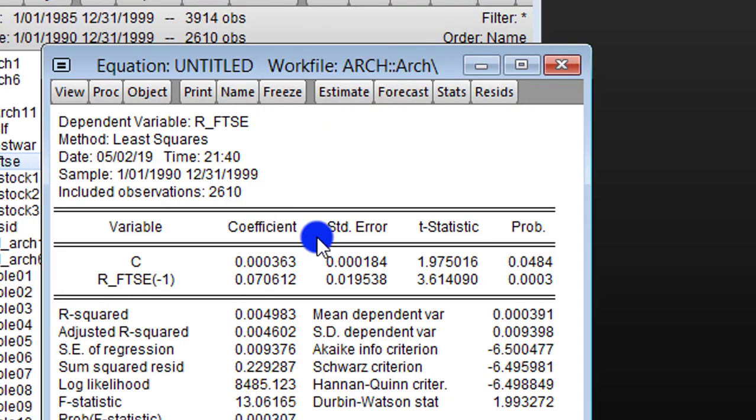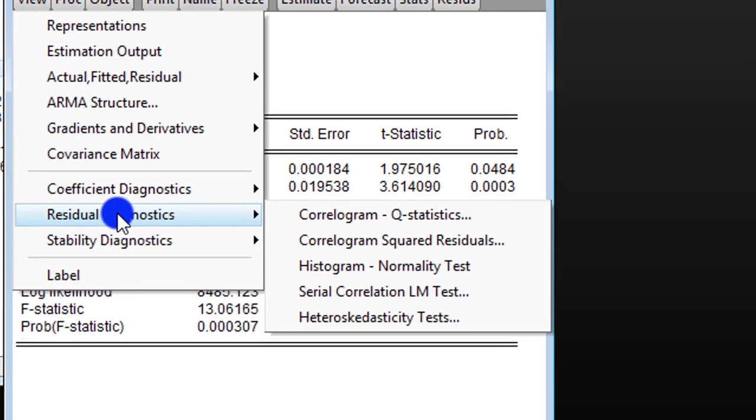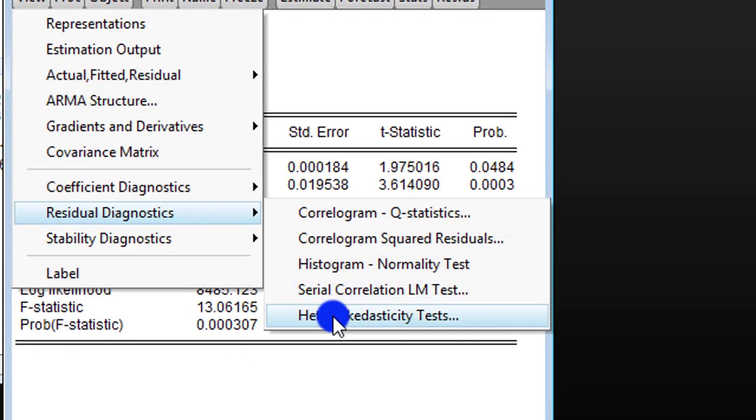This is the output from that regression, but we are not interested in this result. We are concerned about testing for the presence of ARCH effects. So to do that, we go to View, Residual Diagnostics, Heteroskedasticity Test.